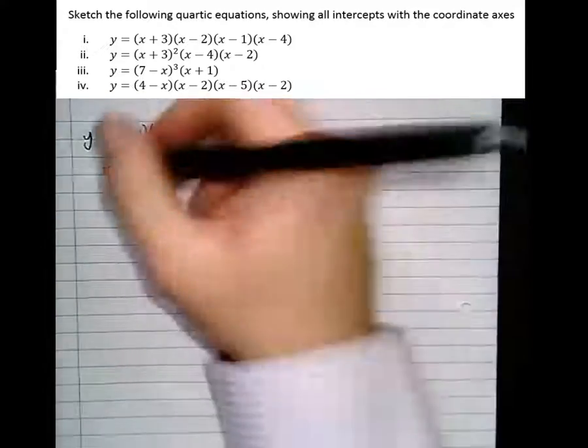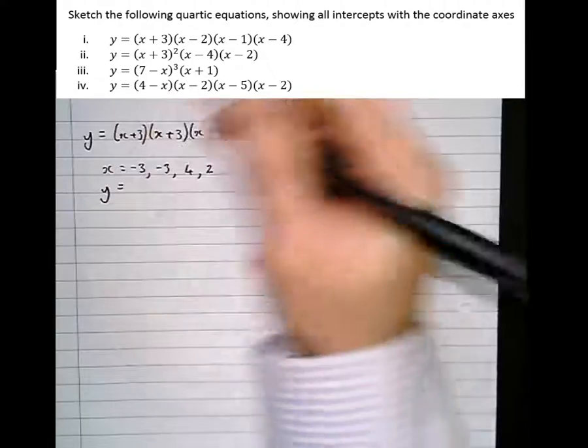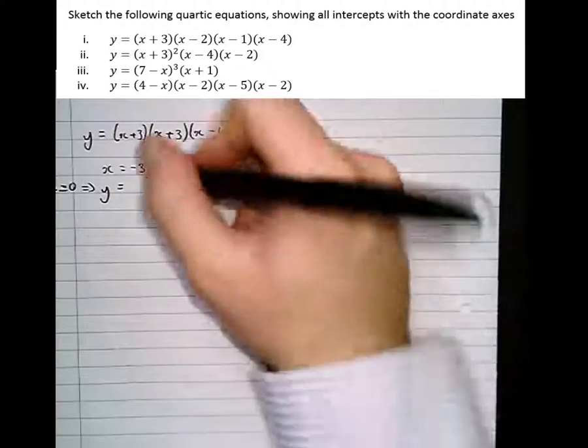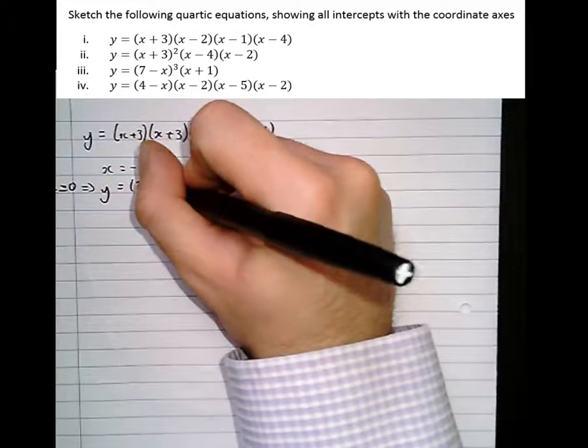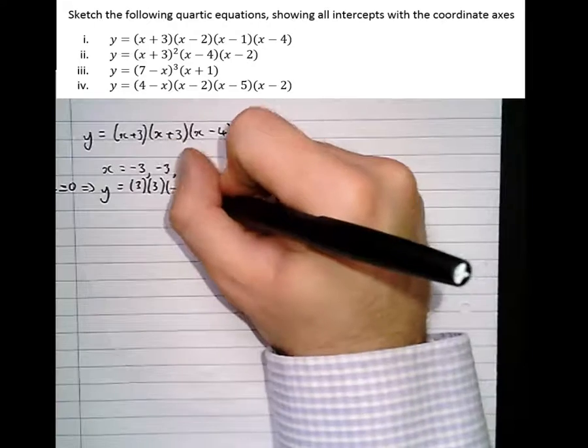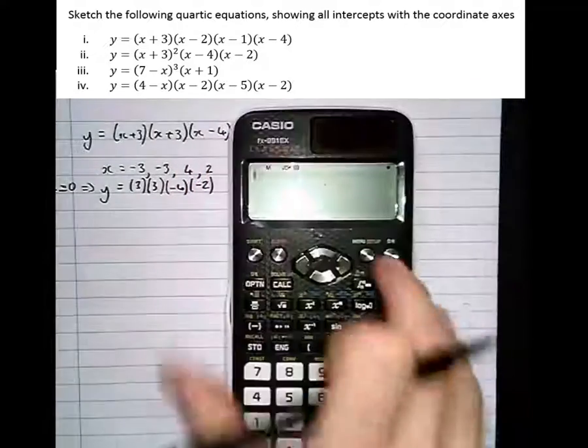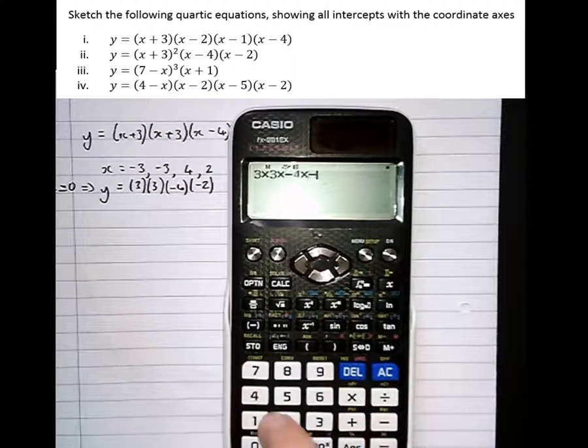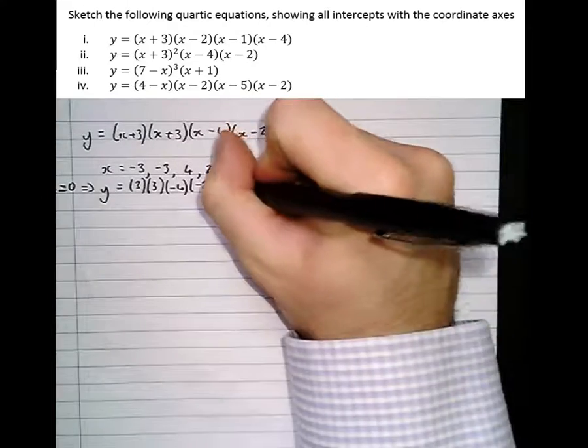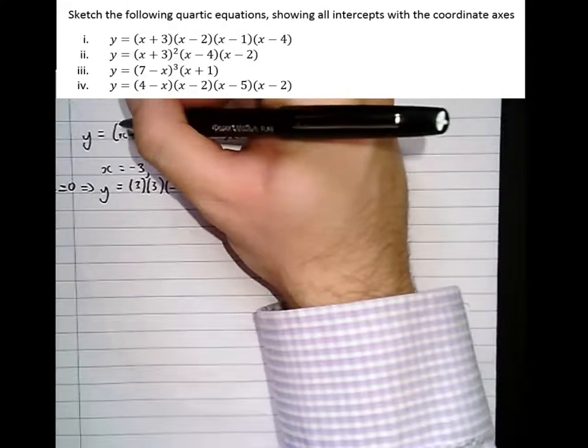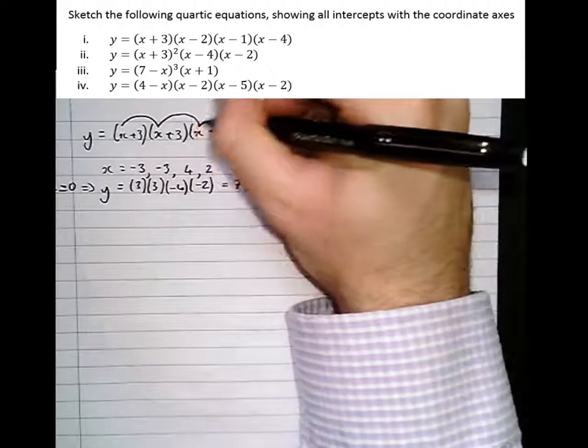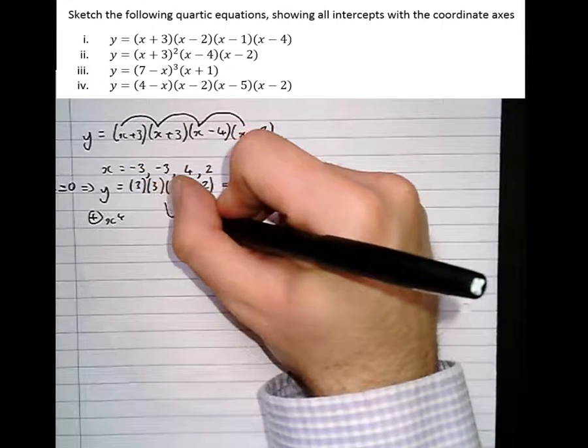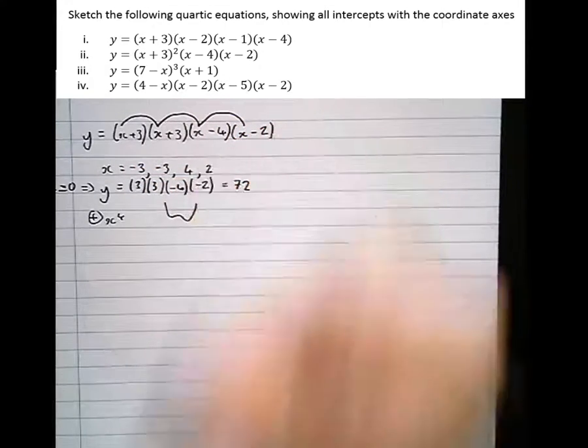The y-intercepts, before we try and draw it, let's find the y-intercepts. The y-intercepts happen when x equals 0, which means that y equals 3 times 3 times minus 4 times minus 2. Speed things up, put in the calculator 3 times 3 times minus 4 times minus 2, which is 72. And decide whether it's a positive or negative quartic: x times x times x times x is positive x to the 4. So it's going to start top left and end top right.